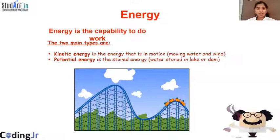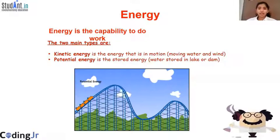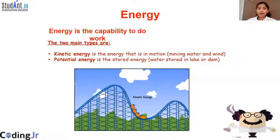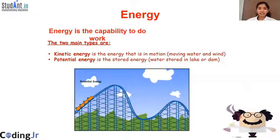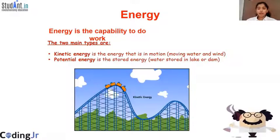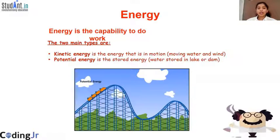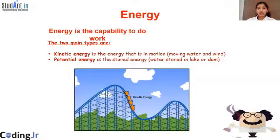How do we get energy? We eat food, we gain energy and we are able to do work. There are two types of energy: kinetic energy and potential energy.